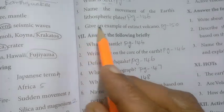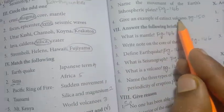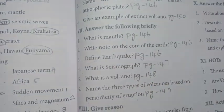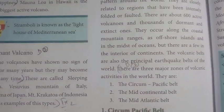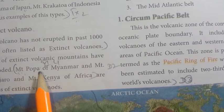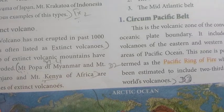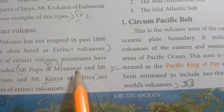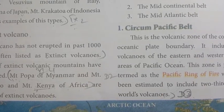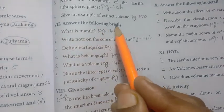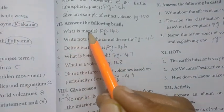Give an example of an extinct volcano — page 150. Examples of extinct volcanoes are Mount Popa of Myanmar, Mount Kilimanjaro, and Mount Kenya of Africa.